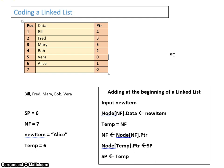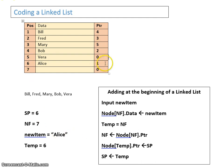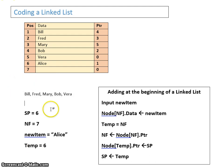Let's trace through this algorithm to verify it works. Start pointer is now 6. Tracing: Alice, Bill, Bob, Fred, Mary, Vera — end. Yes, that now outputs Alice, Bill, Bob, Fred, Mary, Vera correctly.